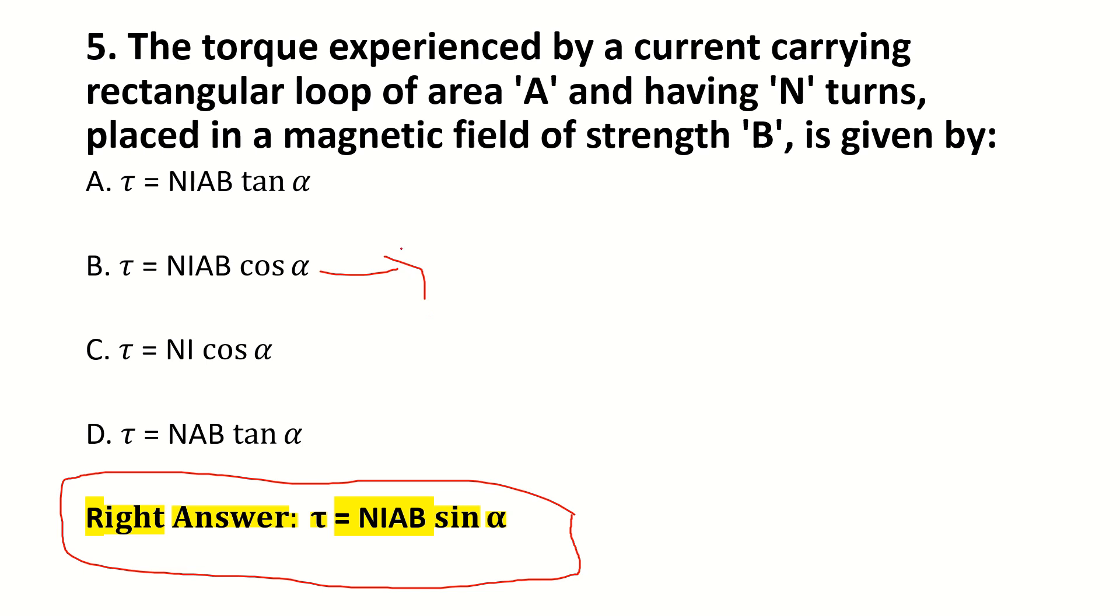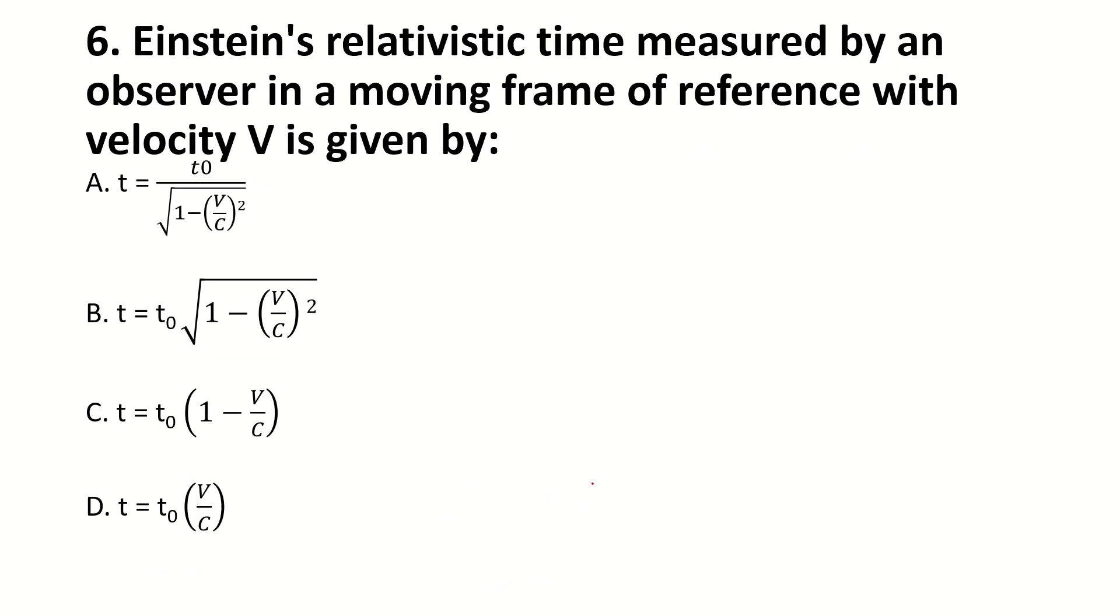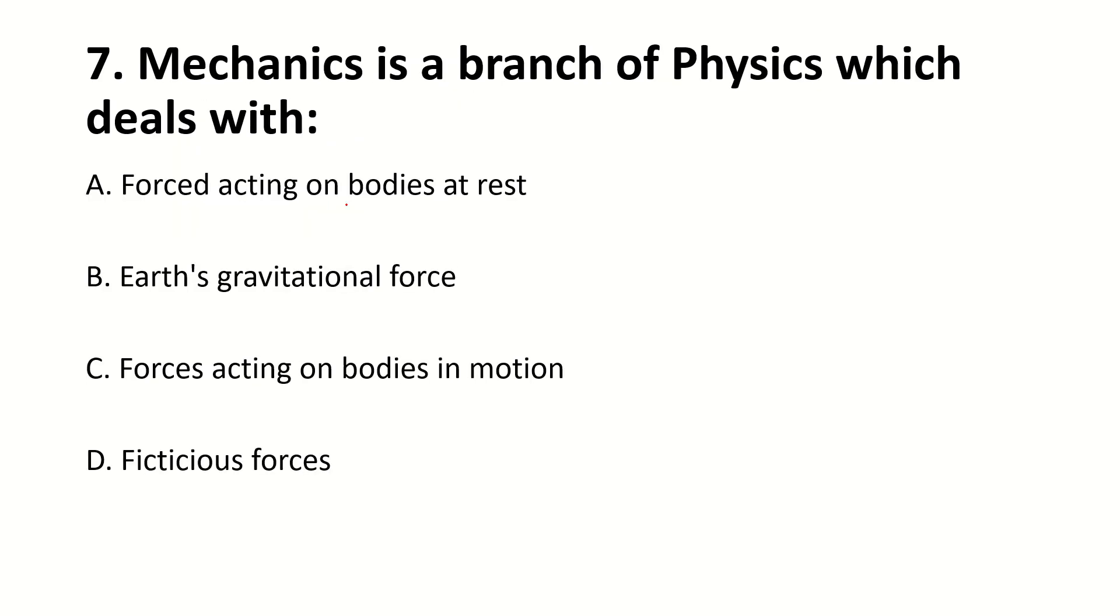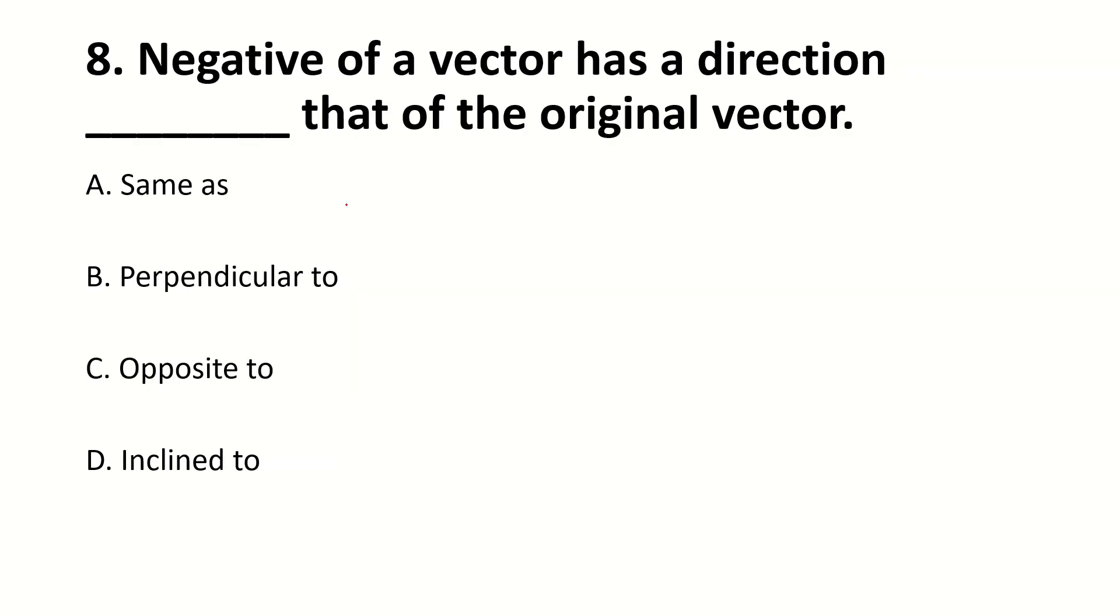In a moving frame a reference with velocity V is given by dash. Right answer is t = t₀/√(1 - v²/c²) or v²/c². A branch of physics which deals with dash. Right answer is forces acting on bodies in motion. Negative of a vector has a direction dash that of the original vector. Right answer is opposite.